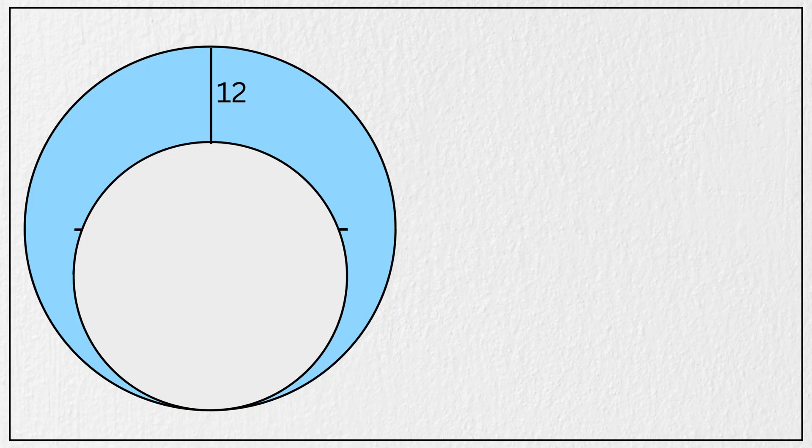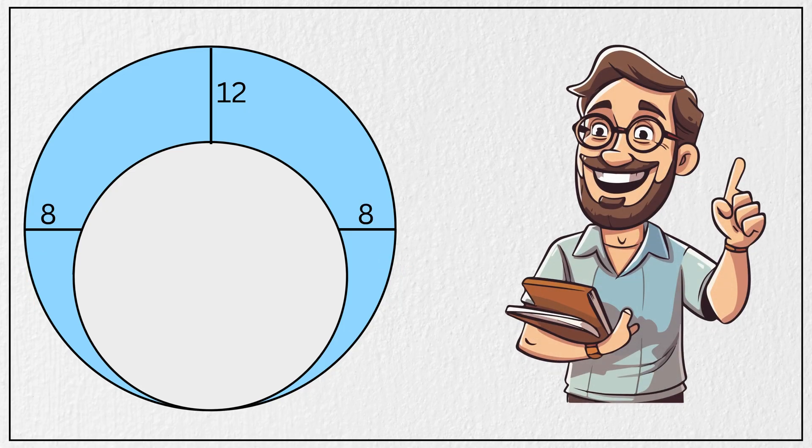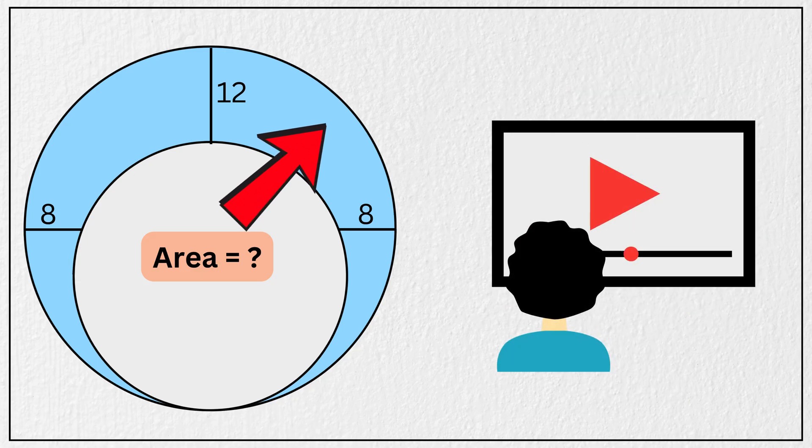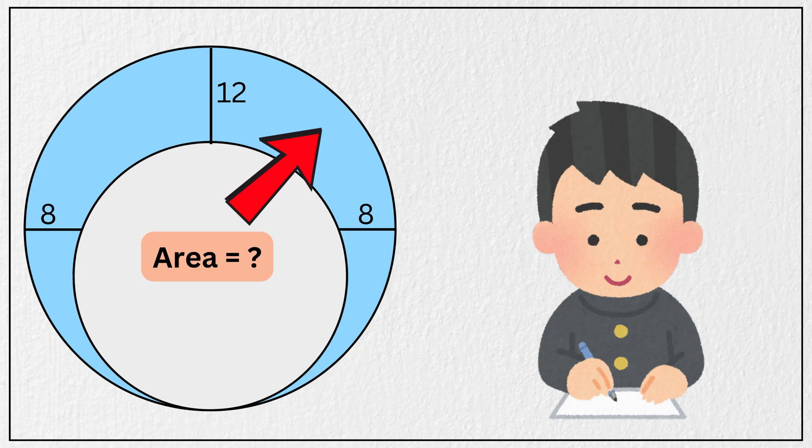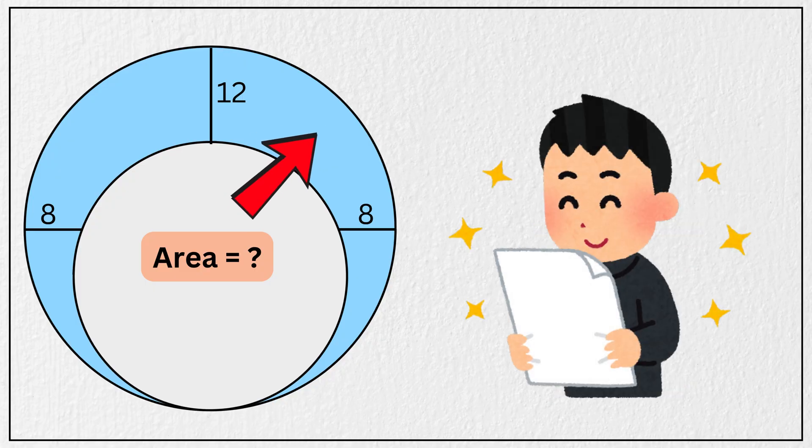And the horizontal distance from the edge of the smaller circle to the edge of the larger one as 8 units. And our goal is to find the area of this blue shaded region. You can pause the video and take a moment to think about it, and when you're ready, you can always come back to verify your answer.